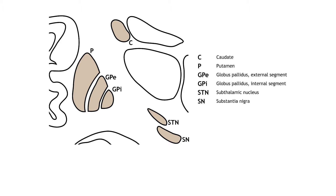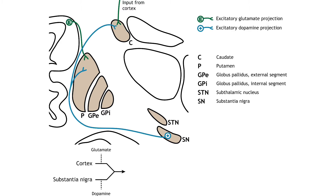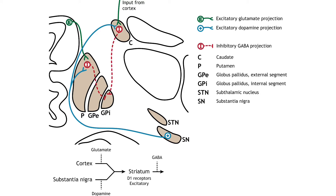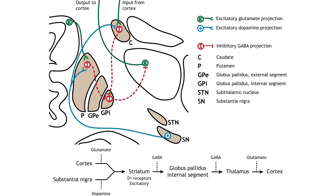The direct pathway in the basal ganglia consists of excitatory input from the cortex via glutamate action, or from the substantia nigra via dopamine action, that synapses on inhibitory neurons in the striatum. The striatal neurons project to the internal segment of the globus pallidus. The internal segment of the globus pallidus then sends inhibitory output to the thalamus, which sends excitatory projections to the cortex.